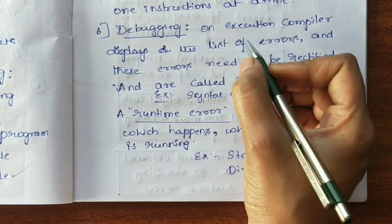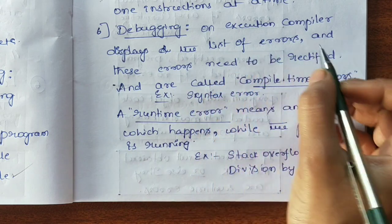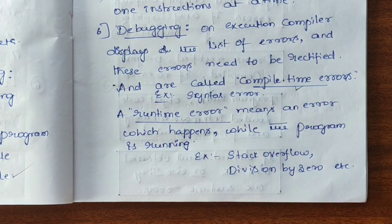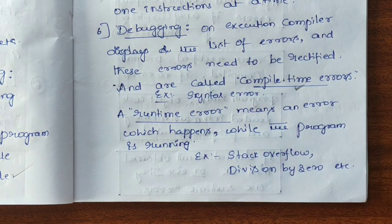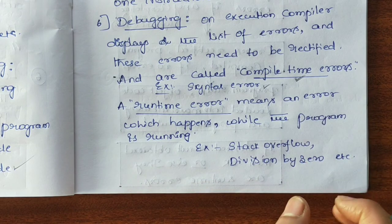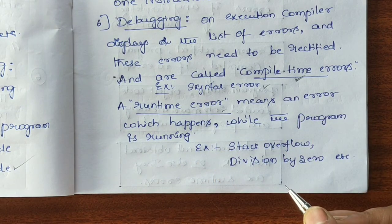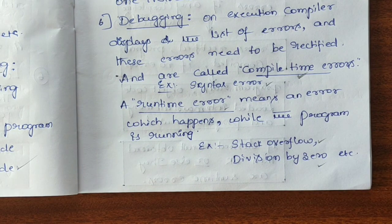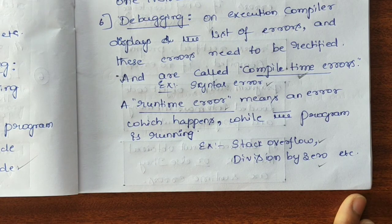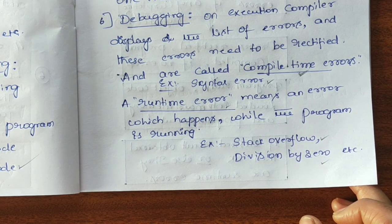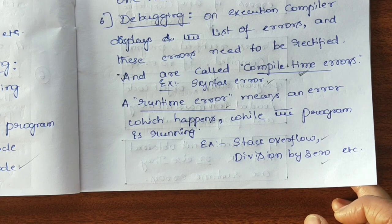The next step is debugging. On execution, the compiler displays a list of errors. These errors need to be rectified and are called compile-time errors — they may be syntax errors or logical errors. We also have runtime errors: whenever the program is executing we may get errors like stack overflow or division by zero. Once debugging is over, we rectify the errors, compile again, and execute again.